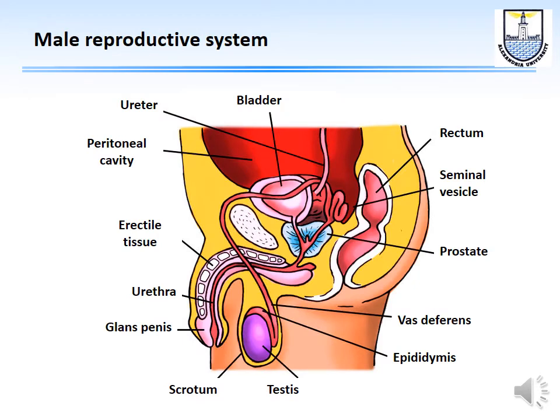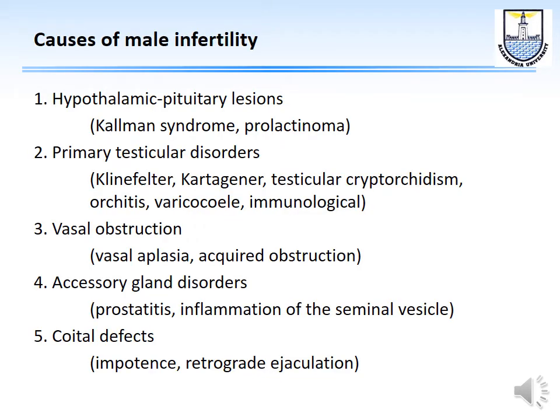The testes are located outside the body because the optimal temperature for spermatozoa production is approximately 29.3°C, not 37°C. The spermatozoa travel into the epididymis and vas deferens — which re-enter the body — then join the seminal vesicle and pass through the prostate to the penile urethra. During ejaculation, the spermatozoa are produced by the testes, while the seminal plasma is produced by the seminal vesicle and prostate.